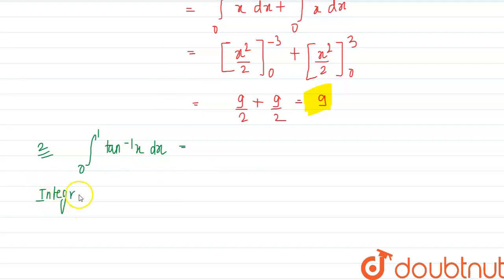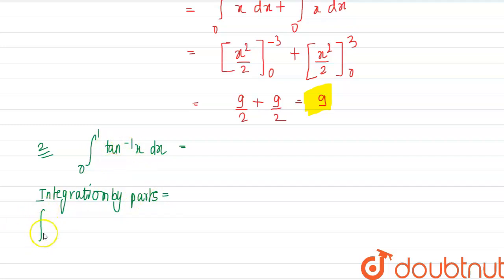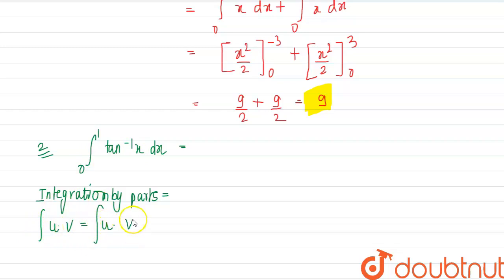Integration by parts states that if we have two functions u and v, we integrate the easier function: ∫u·v dx = u·∫v dx − ∫(u′ · ∫v dx) dx. We integrate the function that is easier to integrate directly.